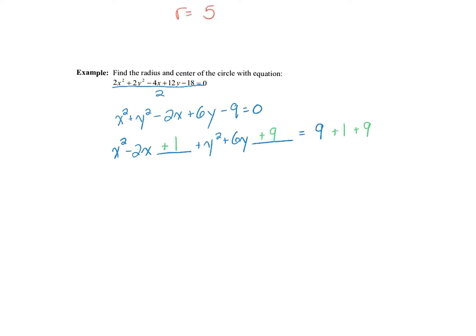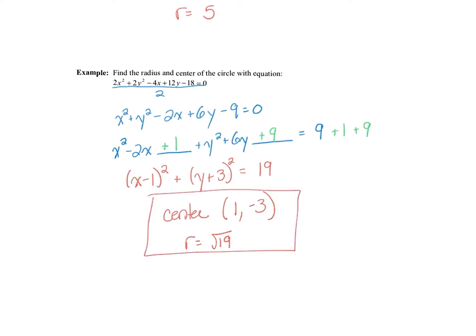The most common mistake is forgetting to balance the equation when adding those numbers to the other side. Factor: x² − 2x + 1 = (x − 1)², and y² + 6y + 9 = (y + 3)², giving (x − 1)² + (y + 3)² = 19. The center is (1, −3) — signs are always opposite — and the radius is √19. Leave it in exact form; since 19 can't be simplified, just leave it as √19.